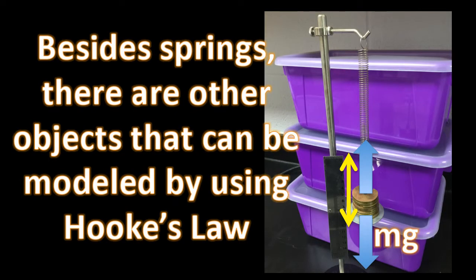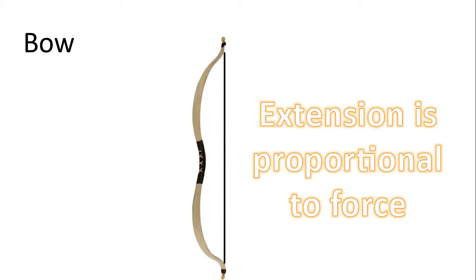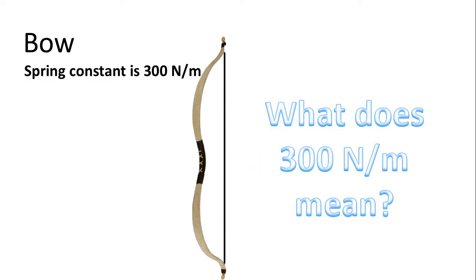So besides springs, there are other objects that can be modeled by using Hooke's law. A bow, for example. The extension of the string of the bow is directly proportional to the applied force. What does that mean? Well, for a typical bow that has a spring constant that is 300 newtons per meter, it means the following.